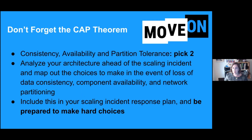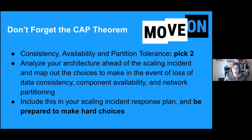When considering distributed system scaling issues overall, it's important to remember the CAP theorem, which states that you can only have two of: consistency, availability, and tolerance to network partitioning. This is not a suggestion — it's a theorem proved by Nancy Lynch at MIT decades ago. It's helpful to analyze your architecture as a whole ahead of any scaling incidents and map out the choices you may be forced to make in the event of a loss of data consistency, component availability, or network partitioning — and be prepared to make hard choices.